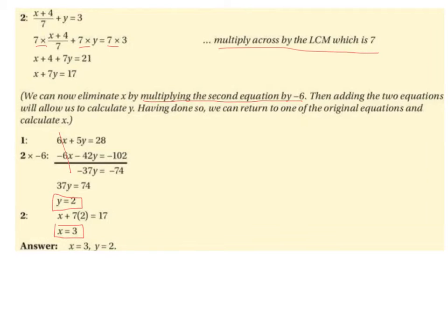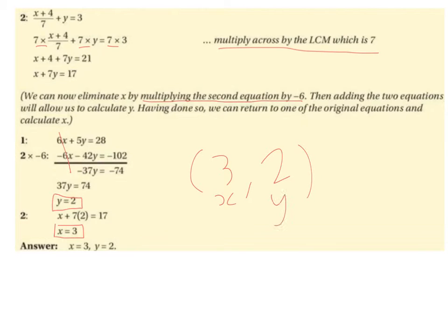So solving these simultaneous equations, we get x equals 3 and y equals 2. Alternatively, we could say the point at which these two lines cross on a coordinate axis is (3, 2) — x value of 3, y value of 2 — which is the point of intersection of the two graphs.